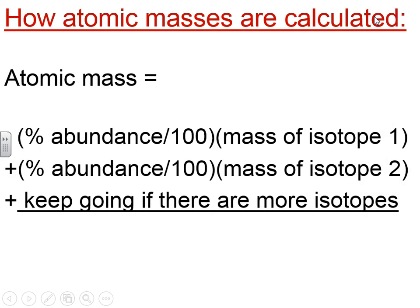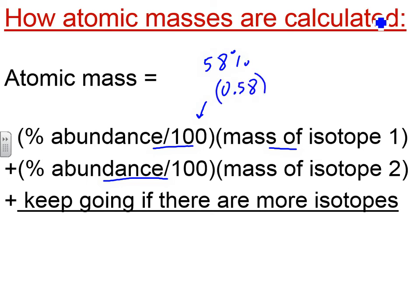Here's the equation to calculate the atomic mass. You take the percent abundance divided by 100 of the first isotope times the mass of that isotope, then do the same thing for the second isotope, and keep going for however many isotopes there are. Dividing by 100 undoes the percent — so instead of 58%, you end up with 0.58 — and that is multiplied by the mass, calculating what fraction of the total mass is due to that isotope.